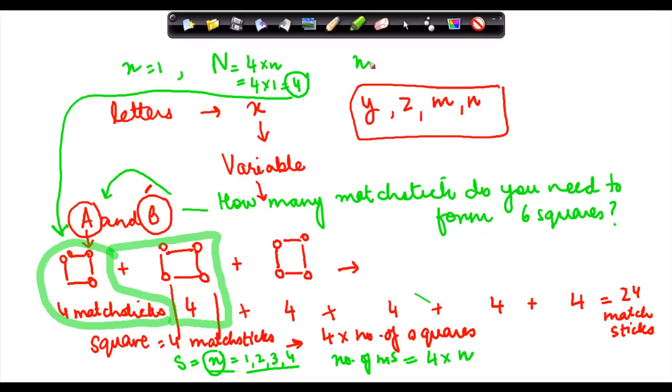If n is equal to 2, then the number of matchsticks which are required is 4 into n, 4 into 2 is equal to 8. And similarly, when number of squares which were required is 6, then the total number of matchsticks which is denoted by the larger N is equal to 6 into 4, which is 24, which is also the answer I got here.